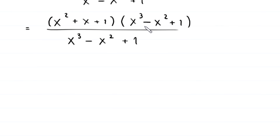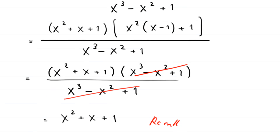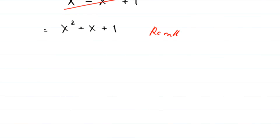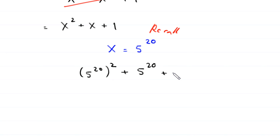Now the expression x cubed minus x squared plus 1 in the numerator cancels with the denominator x cubed minus x squared plus 1. So we are left with only x squared plus x plus 1. Recalling that we supposed 5 to the power 20 is equal to x, this expression becomes 5 to the power 20 whole squared plus 5 to the power 20 plus 1.